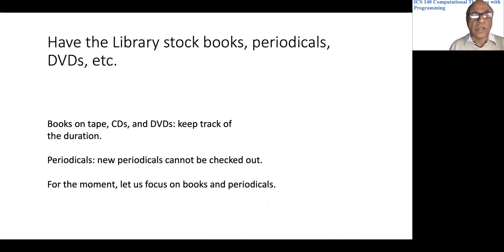Some of those things are shown here: books on tape, CDs, DVDs, periodicals. In addition to books, they have slightly different fields and functionalities. For example, CDs and DVDs should keep track of the duration. Periodicals have a restriction that new periodicals cannot be checked out. Let's not worry too much about all the different types for the moment.